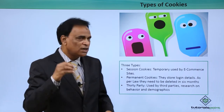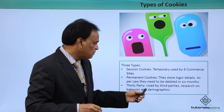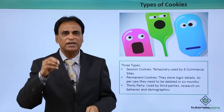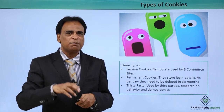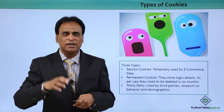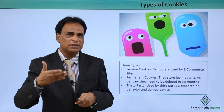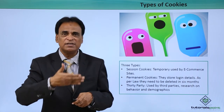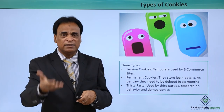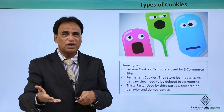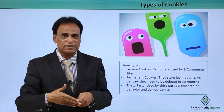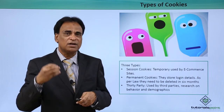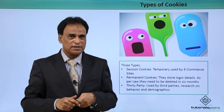The third type is third-party cookies, used by third parties to research user behavior and demographics. These cookies are used by third parties to determine user behaviors, logins, and to conduct research on demographics and geographies based on user behavior.